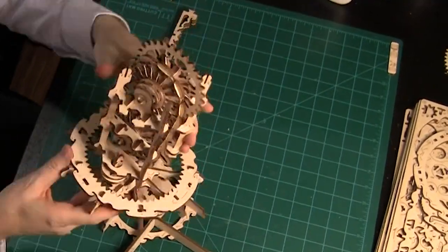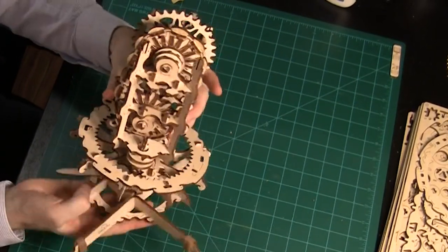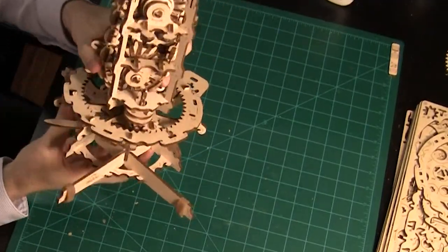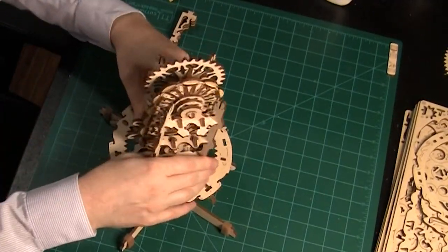Now it's time to put this whole assembly into the main base that we made a while ago. Keep checking both sides of the base and move the rubber bands out of the way.